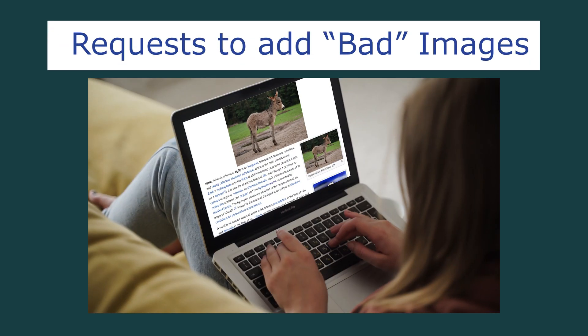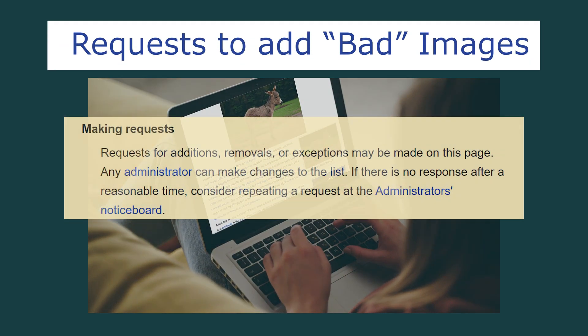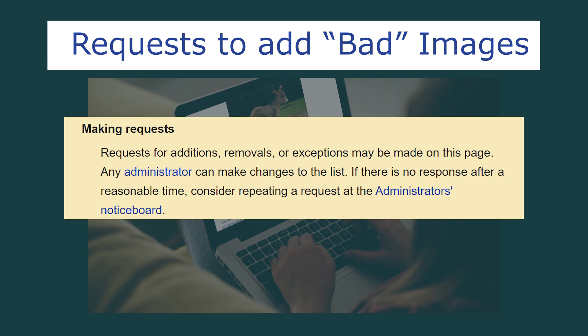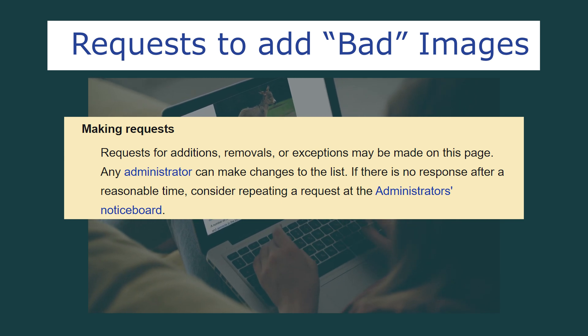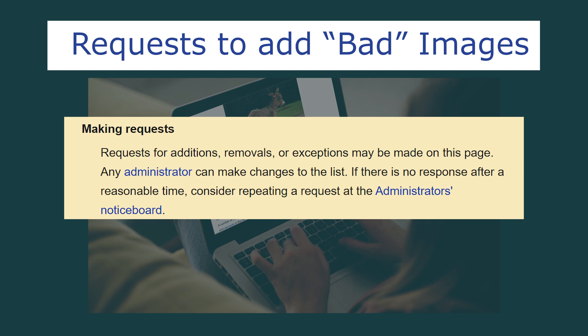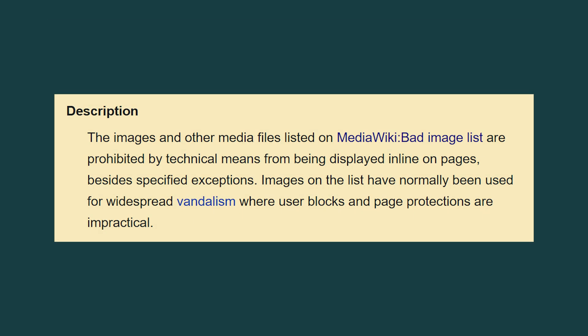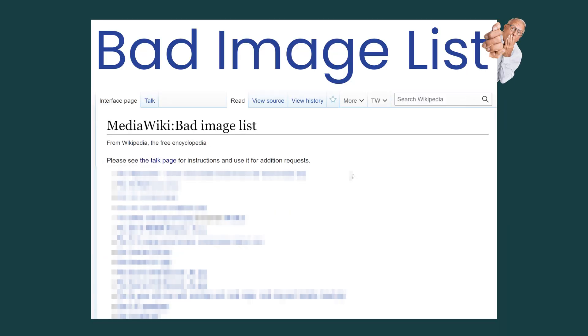If you discover an image being used for image vandalism, a request can be made on the talk page to add it to the Bad Image List. Clear examples and reasoning are required. Images are only placed on this list if user blocks and page protections are impractical — the Bad Image List is a last resort restriction.